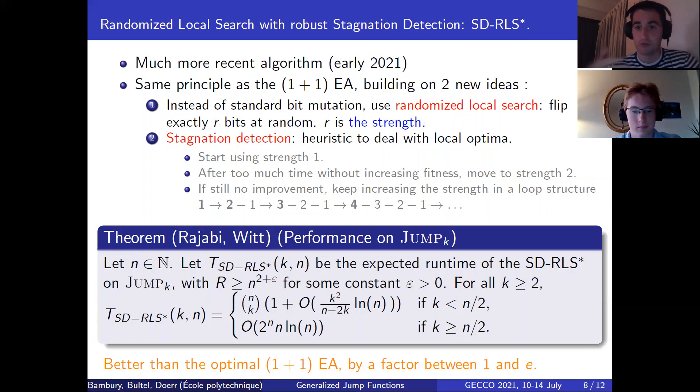The second idea is much more important. It's called stagnation detection. It's a heuristic that was introduced precisely to deal with local optima. So the idea is to run your algorithm, just like you would with some (1+1) EA, starting using strength one, as long as it works. But if at some time you are stuck spending too much time without increasing in fitness, then it might mean that there is no improvement at distance one, or else you would have found it. So you move to strength two. And if the same thing happens, you move to strength three, and so on. And so you keep searching in the strength space until finding the good one that makes you finally increase in fitness. So intuitively, it is a very natural way of solving the problem and a very competent algorithm.